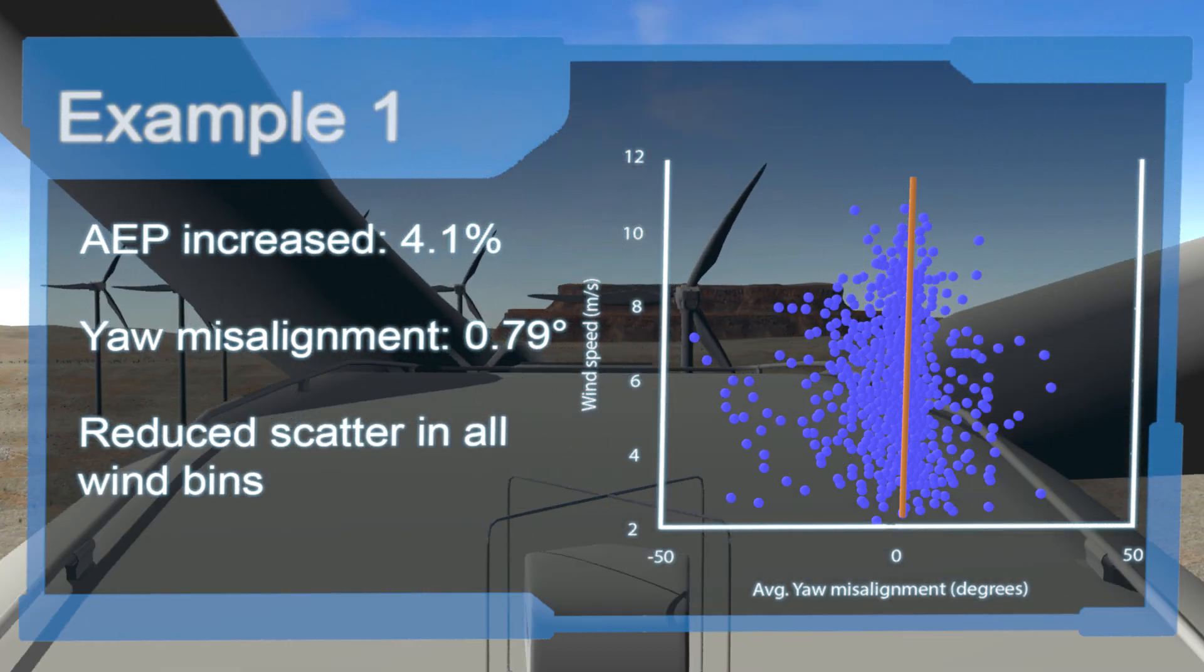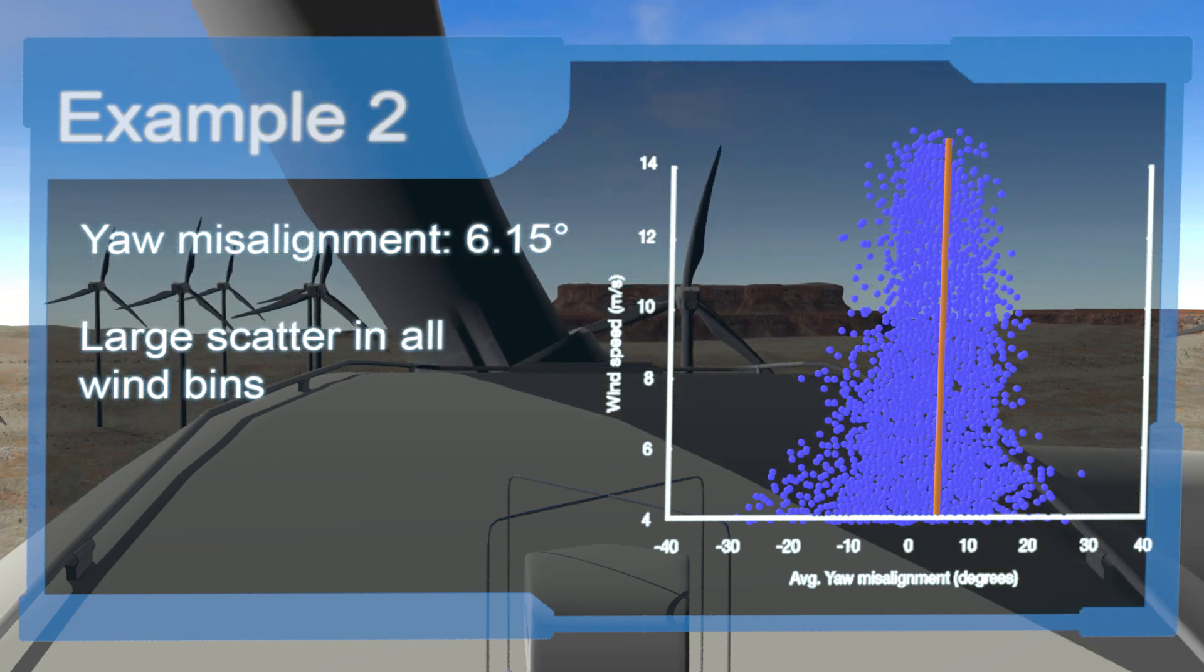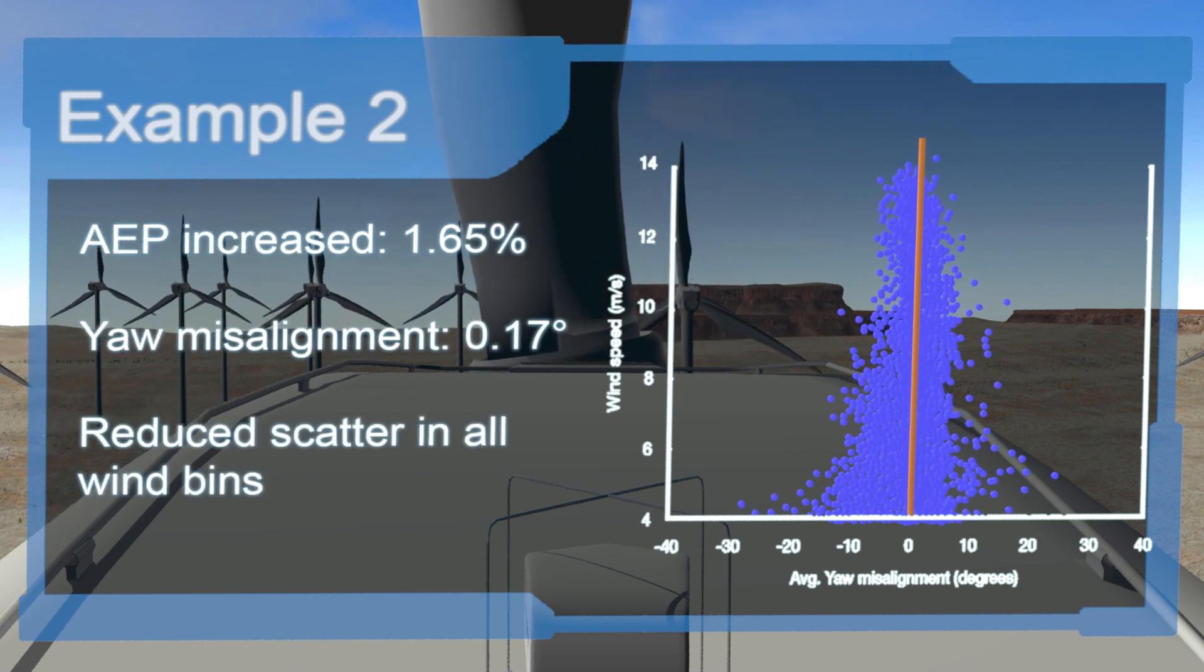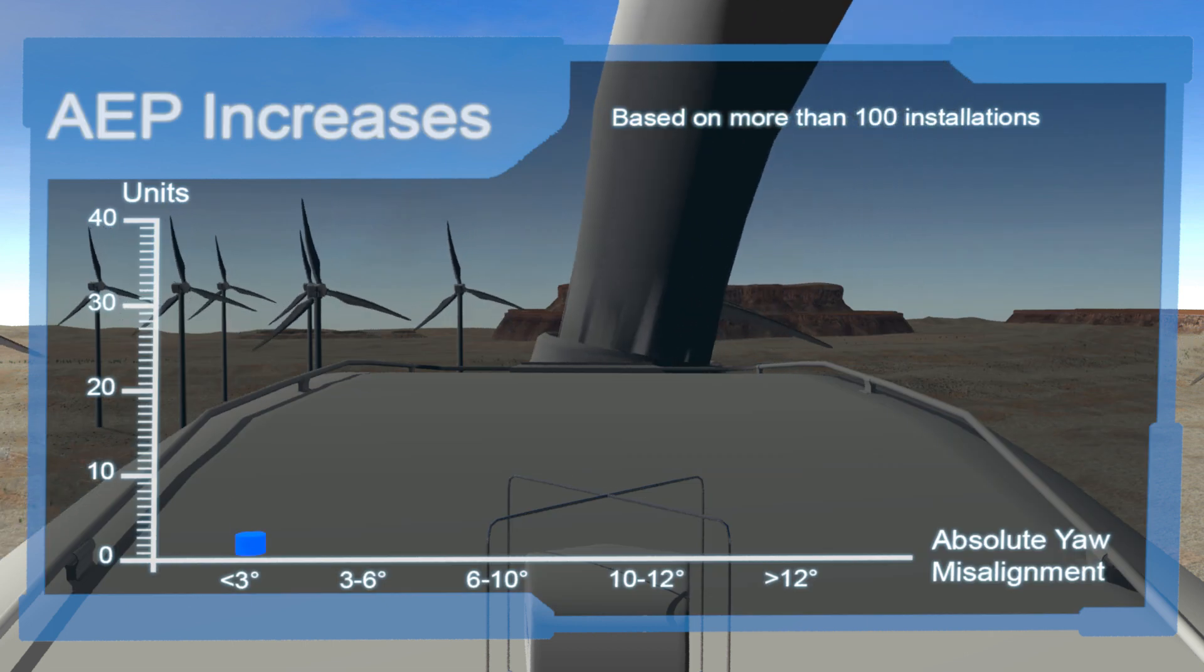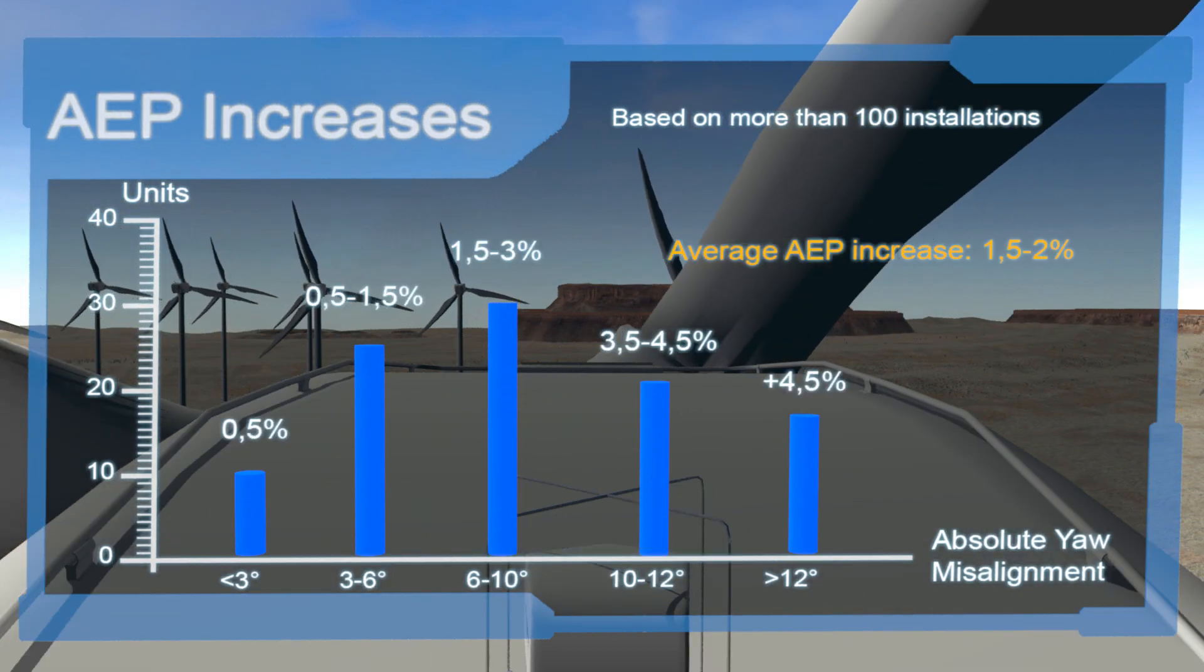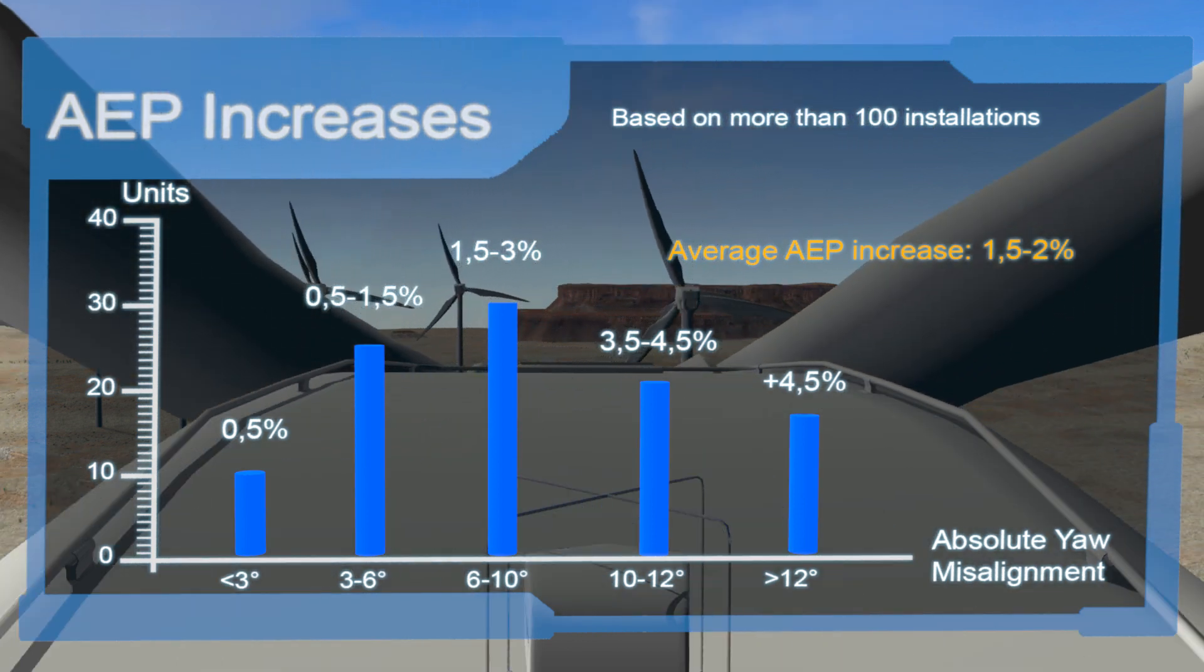The wind timizer solution from Windar Photonics can optimize the turbine by correcting your misalignment and will increase AEP by 1.5% to 2% on average, and in some cases even by as much as 4%. The AEP increase provides a fast return of investment within 12 to 36 months.